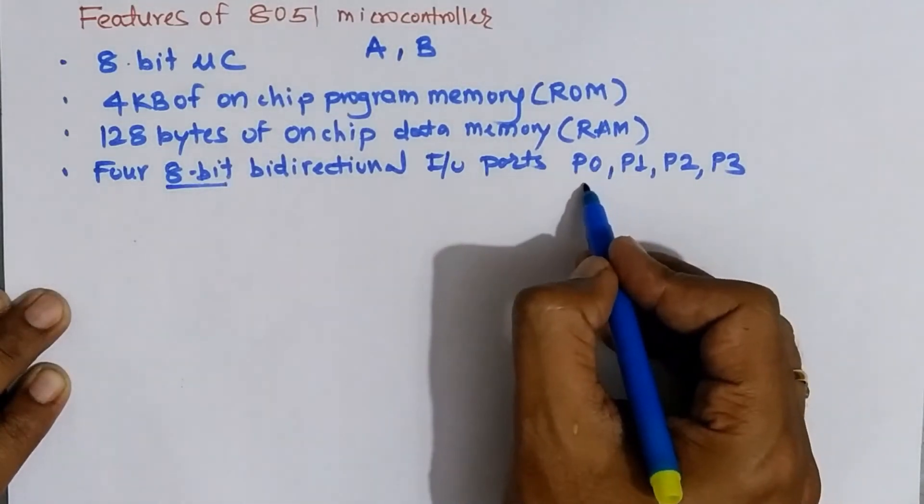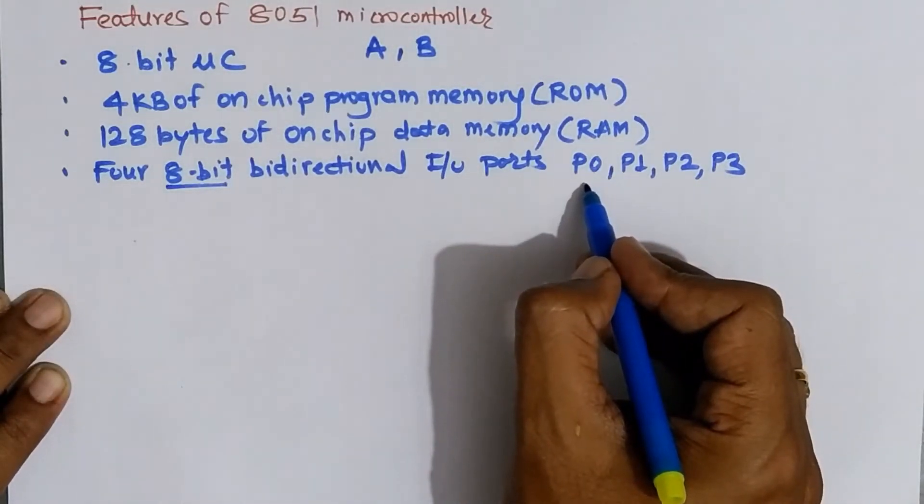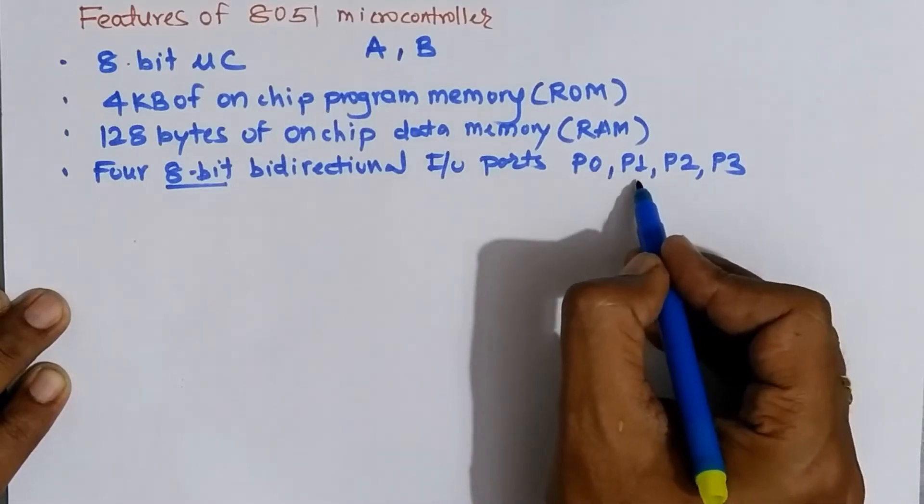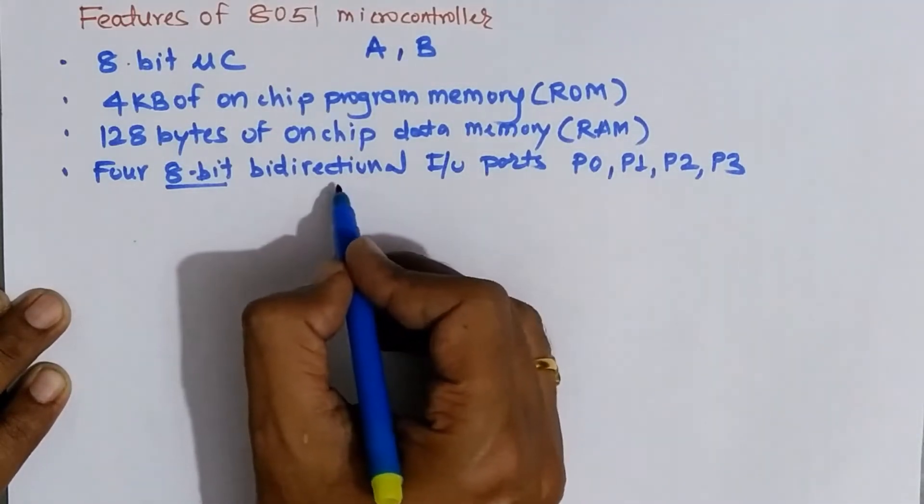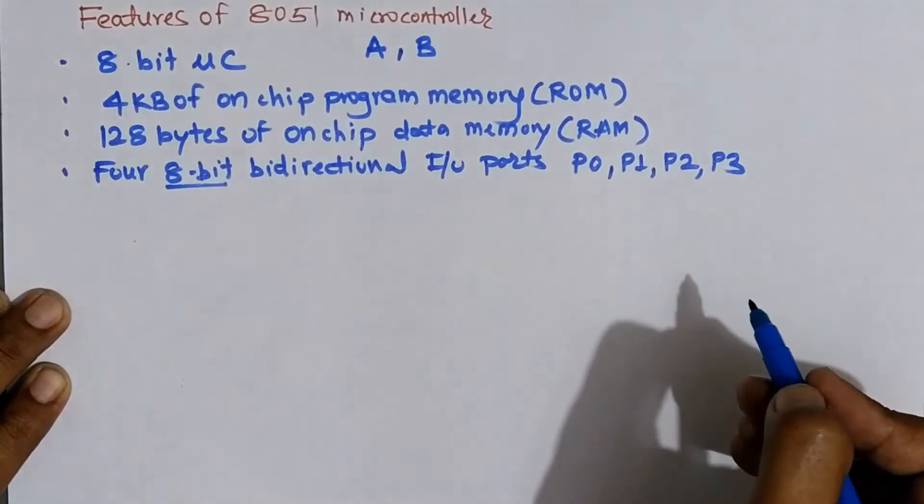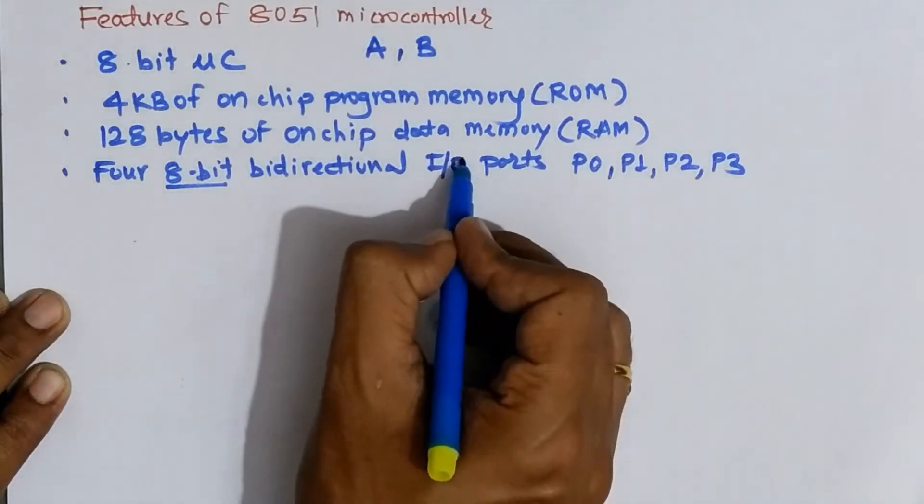So when I say a port 0, it means that it will have 8 different pins from P0.0 to P0.7. Same is the case with remaining port. These ports are bidirectional in nature, it means that we can send out data over the port line as well as we can accept the data from external world through these lines. And that's why the term IO is used.